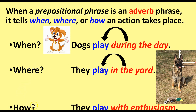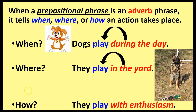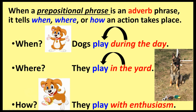And then how they play: 'They play with enthusiasm.' With enthusiasm is our prepositional phrase. Play is the verb, and with enthusiasm tells us how — or the manner in which — they play.